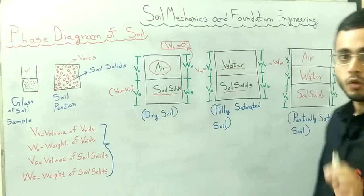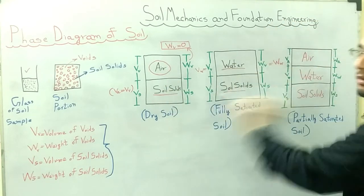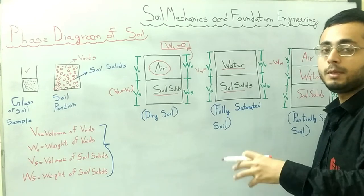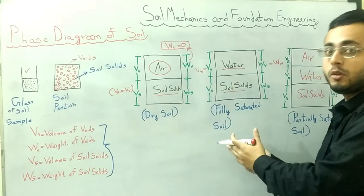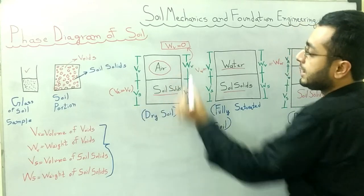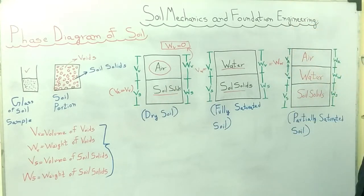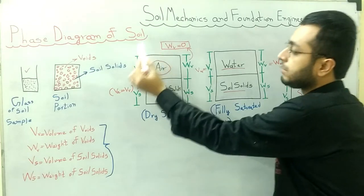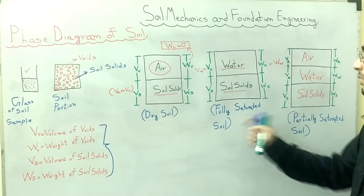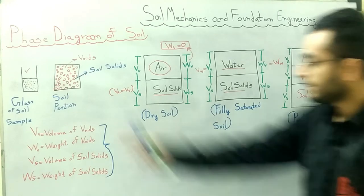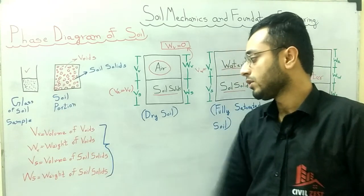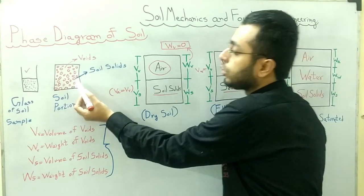These are all referred to as phase diagrams because they represent the different phases, or components, of the soil. One important notation to remember: when drawing the phase diagram, we always write volume on the left-hand side and weight on the right-hand side. The key notations are: Vv = volume of voids, Wv = weight of voids, Vs = volume of soil solids, and Ws = weight of soil solids.